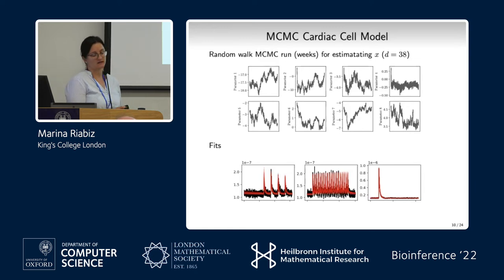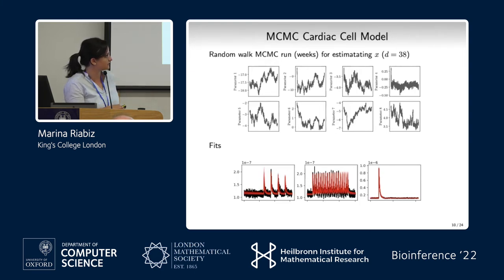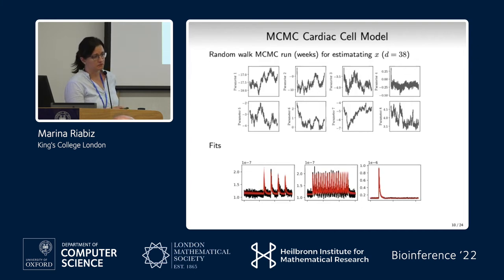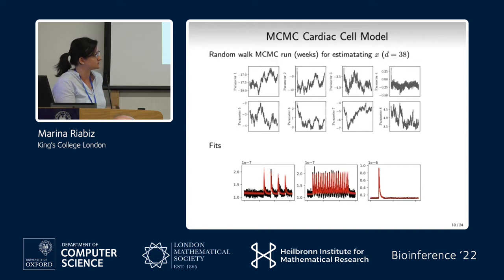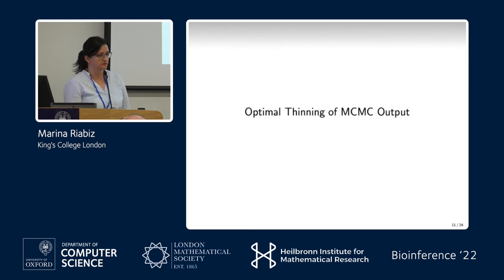But if we look at the fits of the data using some of these samples, we know they do contain some information because the fits look very much like the data. We also have posterior predictive plots where we leave out one-third of the time series and fit the rest — a similar scenario. So we wanted to make the most out of these samples by selecting which are most representative of our posterior, which led us to develop the concept of optimal thinning of MCMC output.